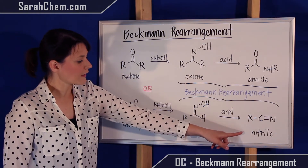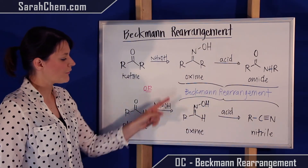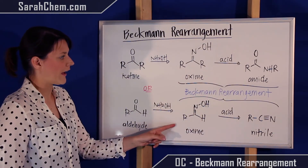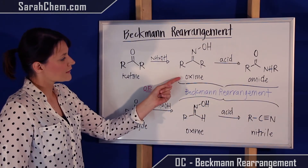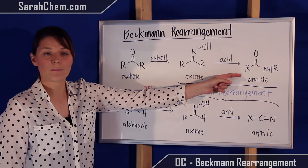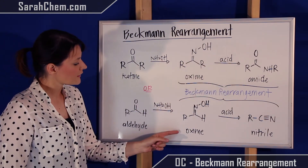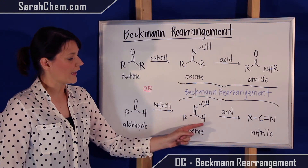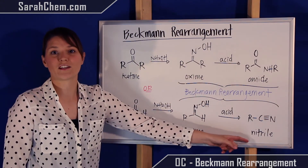So the final product depends on the type of oxime that we have. An oxime with two R groups will end up as an amide, and an oxime with an R and an H will end up as a nitrile.